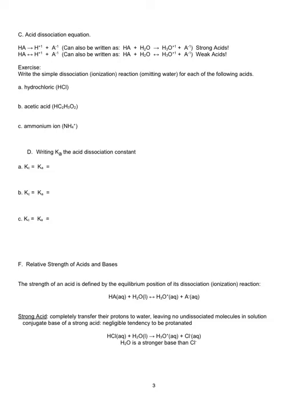The next thing is the dissociation equation for acids. When acids dissociate, they produce ions. If it's a strong acid, you'll see a single-sided arrow. I strongly recommend including water in all dissociation equations, because H⁺ is a very unstable particle. The way to stabilize it is by reacting with water to form the hydronium ion. For weak acids, you'll see a double-sided arrow — the reaction can go back and forth and doesn't dissociate completely.